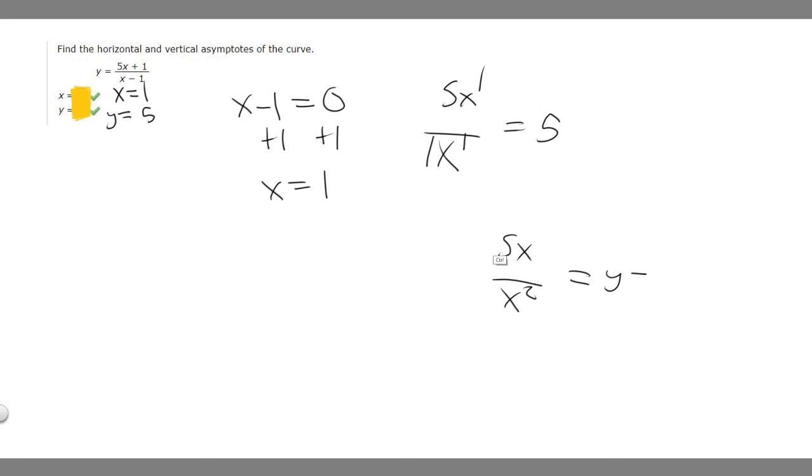Those are just some rules that you need to know. But in this case, it's pretty easy because they're the same degree. If they're the same degree, we just divide the two numbers. So the answer to this is x equals 1 and y equals 5.